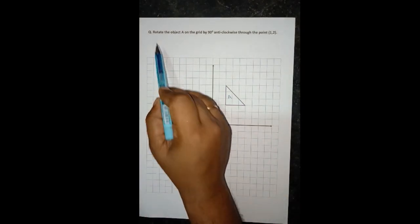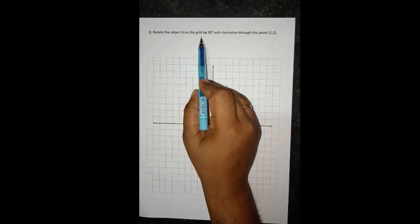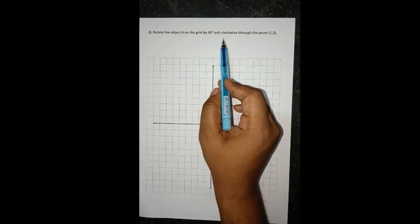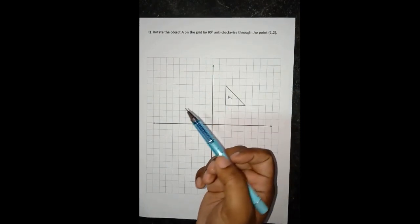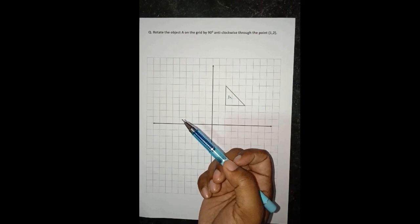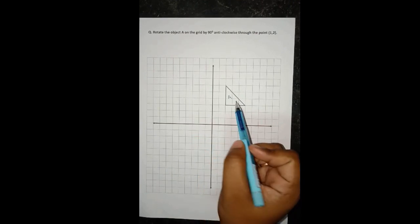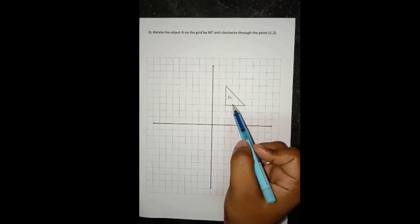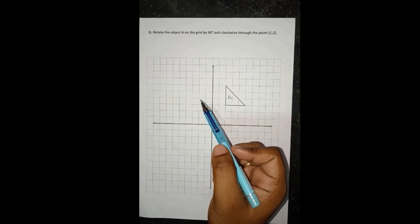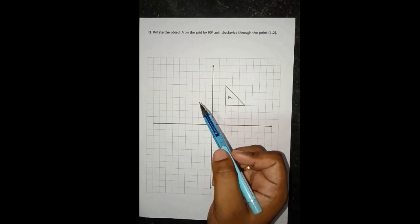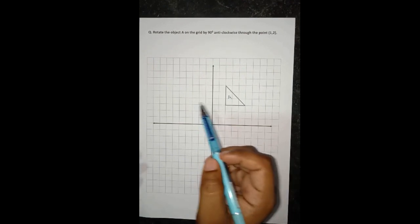The question says rotate the object A on the grid by 90 degrees anticlockwise through the point 1 comma 2. This is a very common question of IGCSE board. What you have to do in this question is we have to rotate this object A 90 degrees anticlockwise, that is towards my left, towards your left.